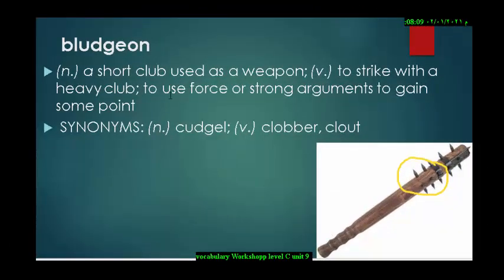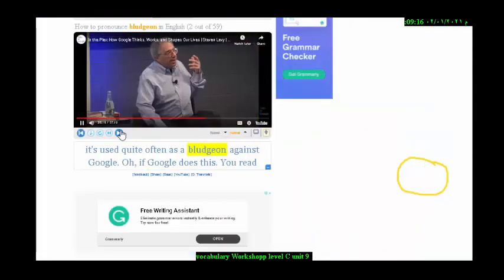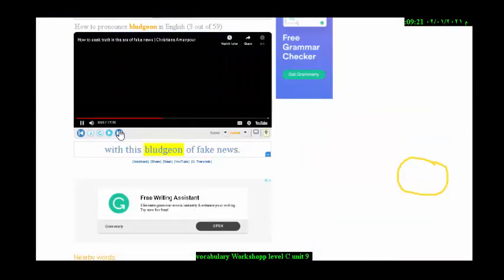Next word is bludgeon. Bludgeon is a noun, which means a short club used as a weapon, like this one in the picture here. And also, if you use it as a verb, it means to strike with a heavy club or to use force or strong arguments to gain a point. The synonyms are cudgel. And as a verb, clobber or clap. This word is most commonly used in games that include fighting scenes. And it's used quite often as a bludgeon against Google.